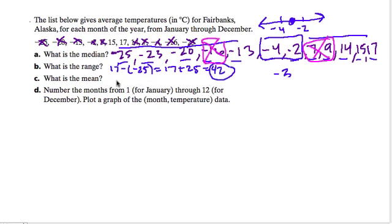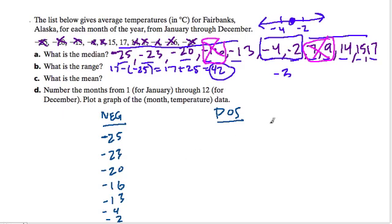Okay, so to deal with the mean in a way that's not so frustrating, we're going to line all the negative numbers up in one column and the positive numbers in the other. We're going to see what cancels out. So in the negative column, we have negative 25, negative 23, negative 20, negative 16, negative 13, negative 4, and negative 2. In the positive column, we have 7, 9, 14, 15, and 17.